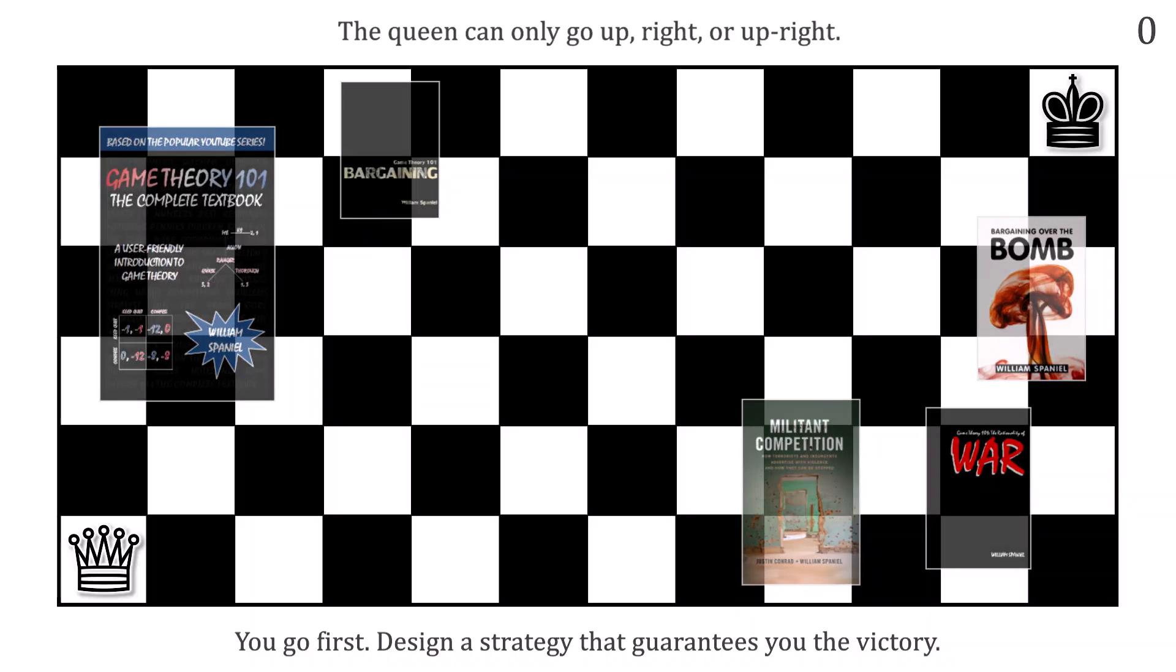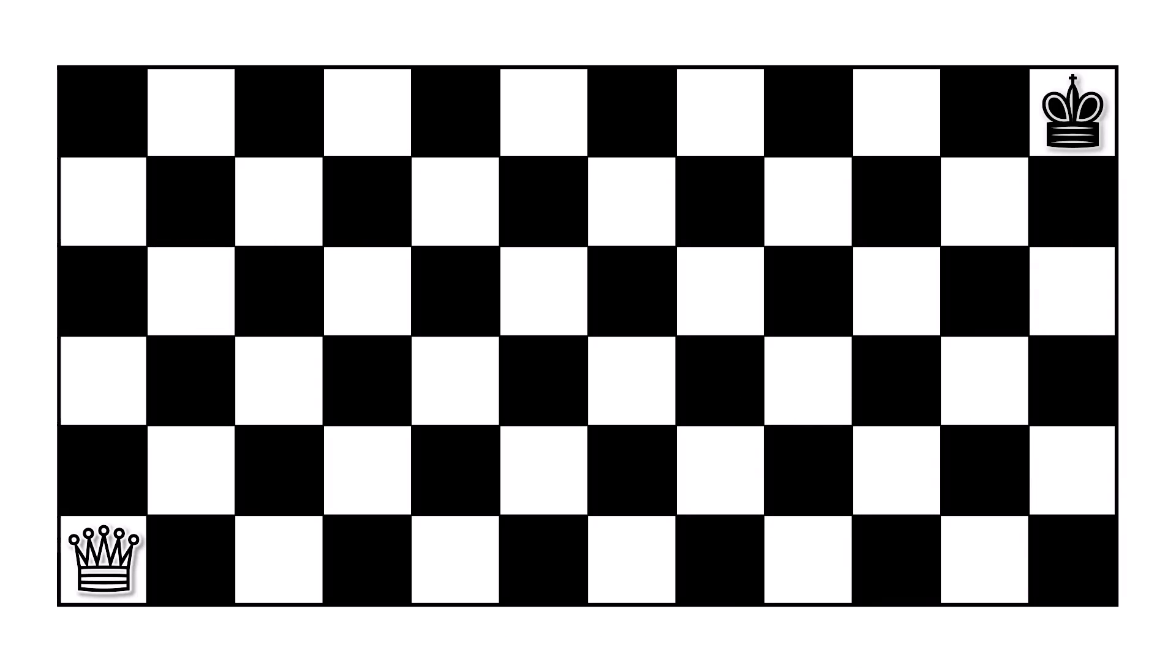Are you ready for the solution? If not, here's another hint. Your first move should be to take the queen to I1.